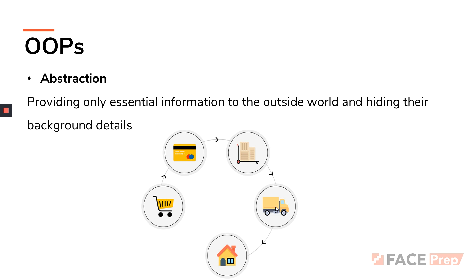One last example of data abstraction is online shopping sites. You just click 'add to cart' and 'deliver to this address,' and what happens after that is a very big process. These days you can also track your packages — they'll tell you it has entered a particular shipyard, and in how many days it will reach your house. But previously you just had to click buy, do the payment, and wait for a tentative delivery date. All these background processes you do not worry about — you're just focused on what you want and you click on it. This is again a beautiful example of data abstraction.